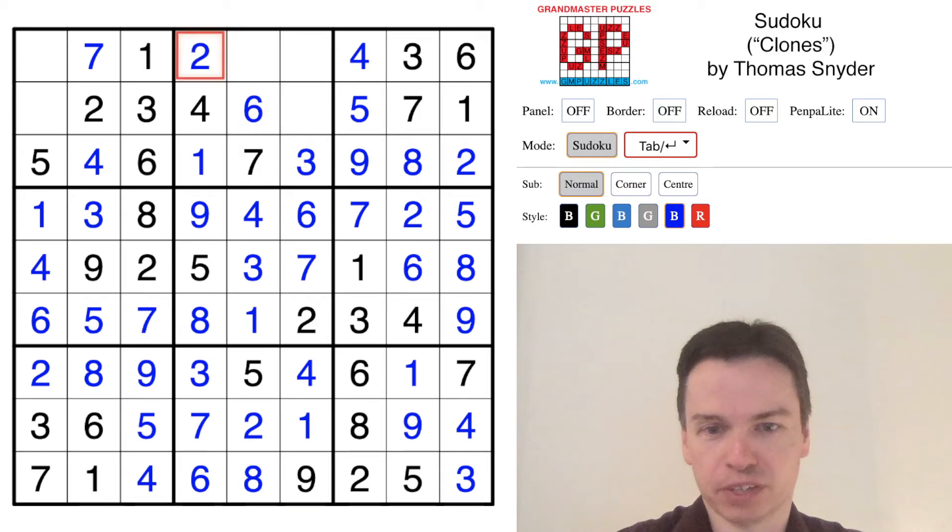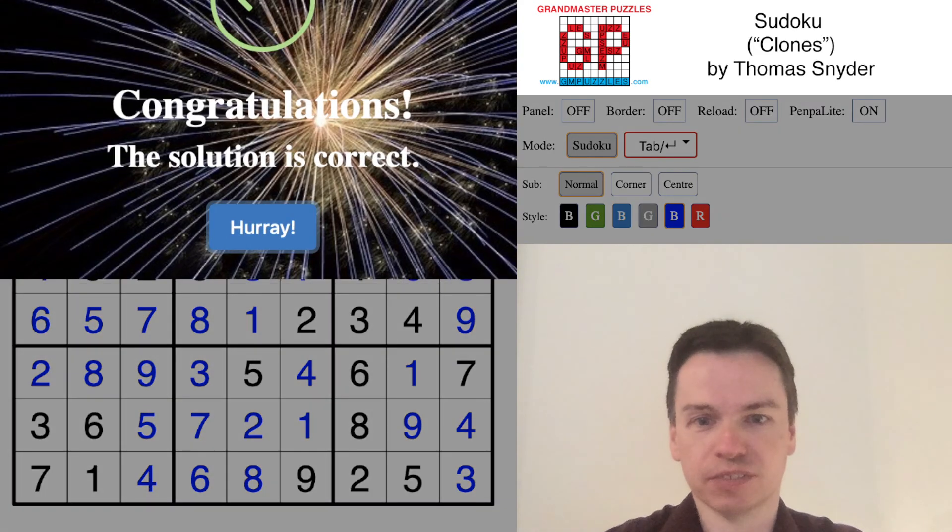The remaining digits, we needed two up top, we need a nine up top, that puts in a nine here and an eight here, puts in an eight and the last digit five, and we finish the grid.